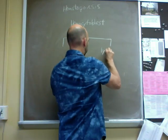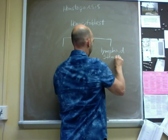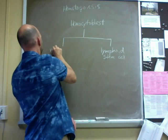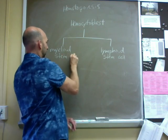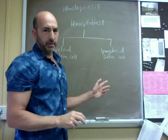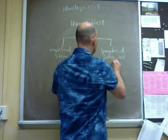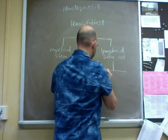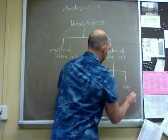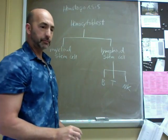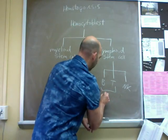That is the lymphoid stem cell. The lymphoid stem cell is pretty simple because it basically divides and starts to produce three different lineages: the B cells, the T cells, and the NK, the natural killer cells.